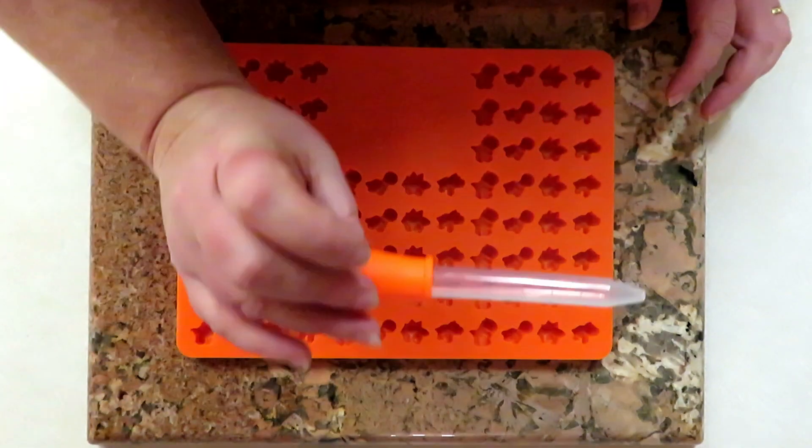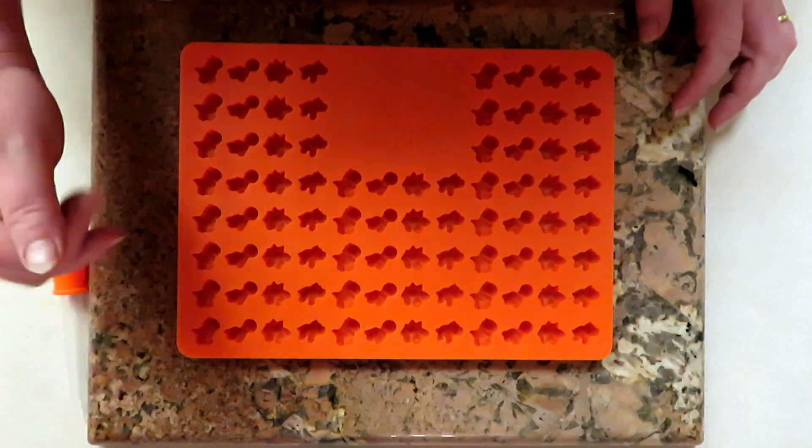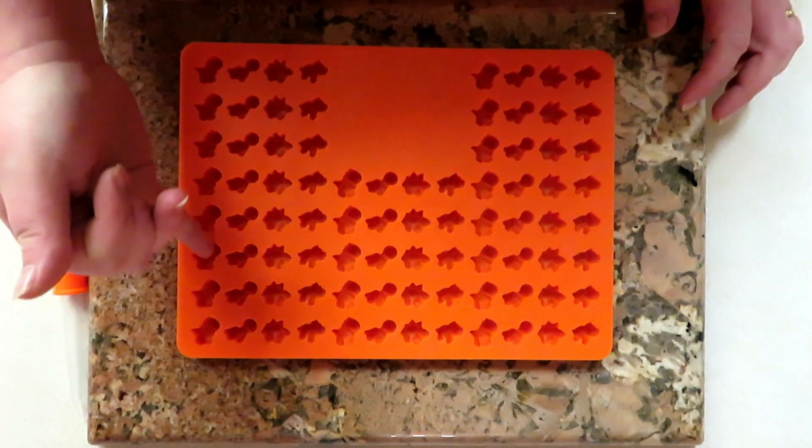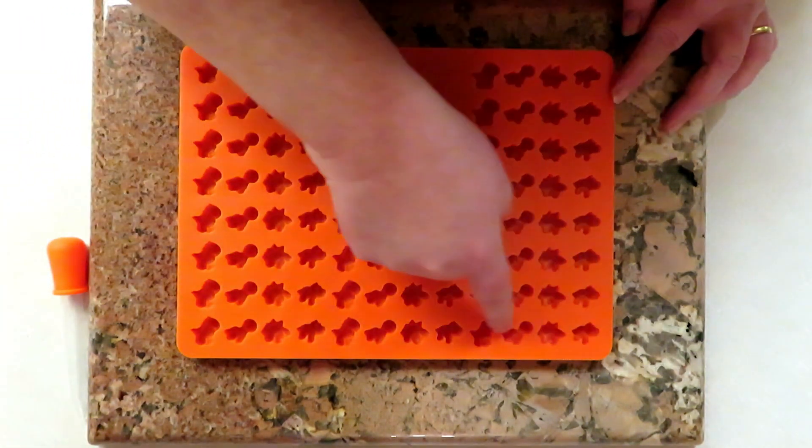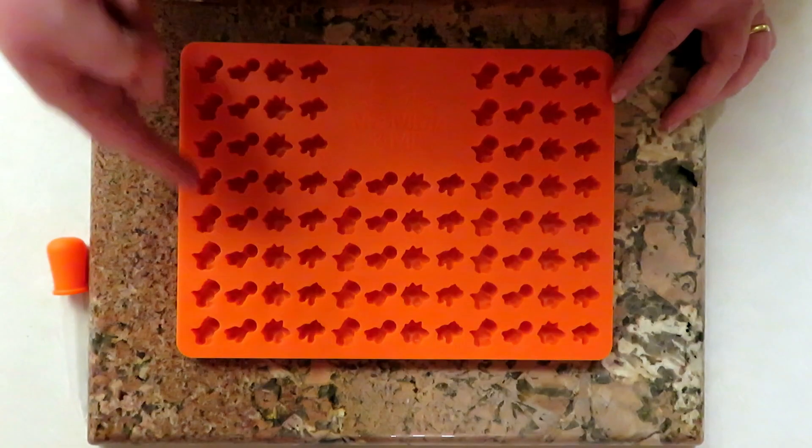So if you want to use this dropper for whatever or if you're going to do it for gummies then you can do that. But what I'm going to do is I'm going to bypass using the dropper for today and I'm just going to do a quick pour and go down the line to get different dinosaurs.